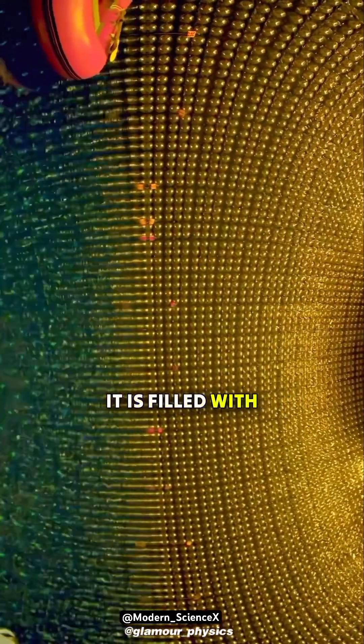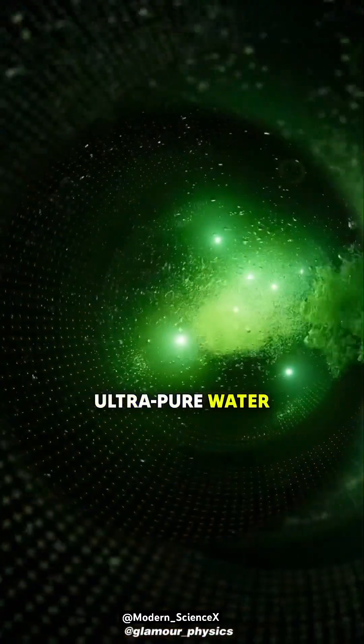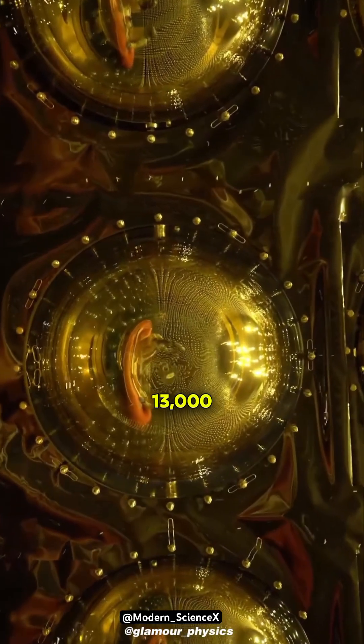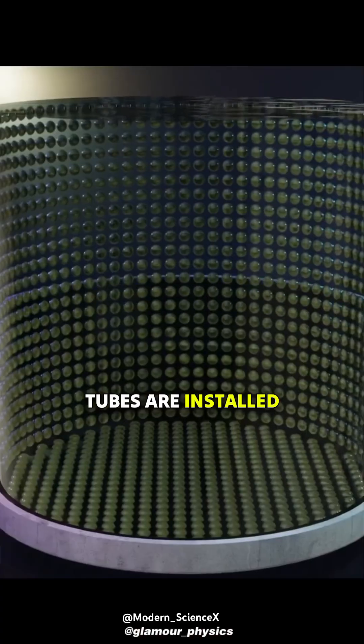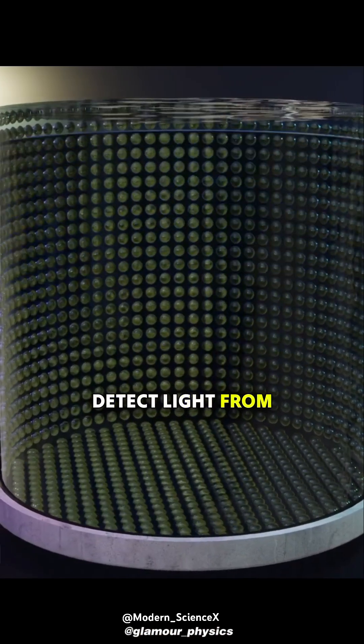It is filled with 50,000 tons of ultra-pure water, and approximately 13,000 photomultiplier tubes are installed on the tank wall to detect light from Cherenkov radiation.